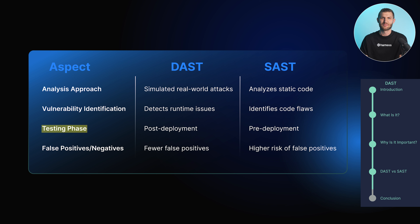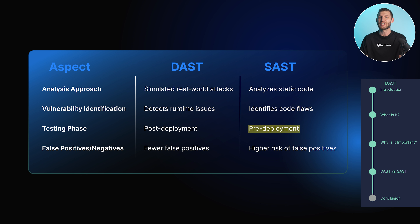In terms of testing phase, DAST is typically conducted later in the software development lifecycle, after the application is built and deployed, providing a realistic security assessment in a production-like environment. SAST, on the other hand, is performed early in the SDLC, allowing developers to address security issues before deployment. DAST has a lower risk of false positives due to real-world attack simulations, but may miss vulnerabilities requiring specific user interactions.